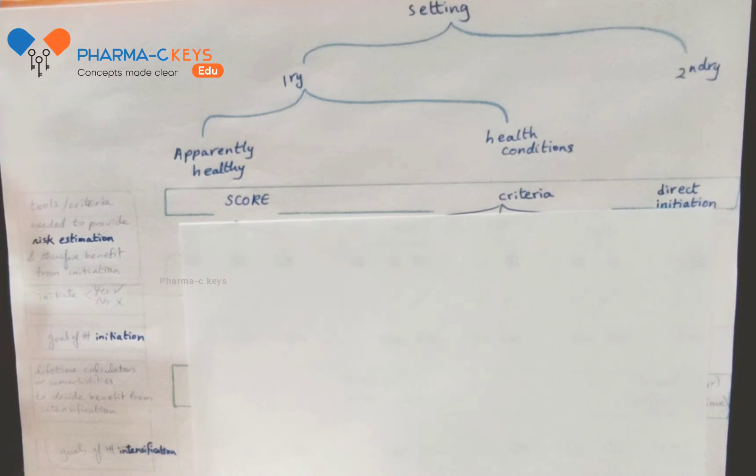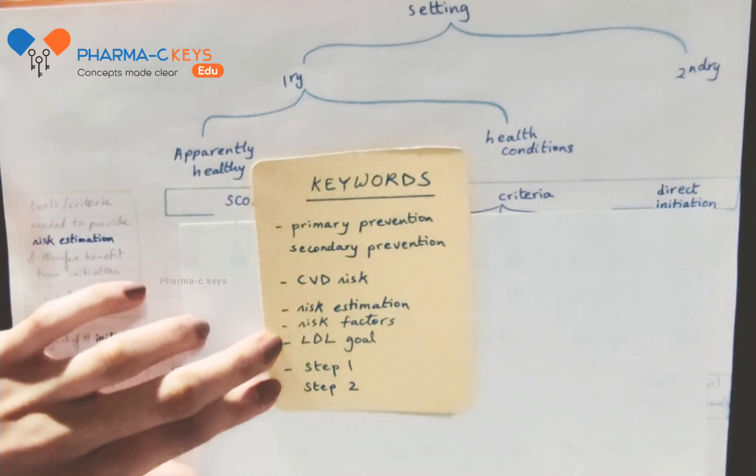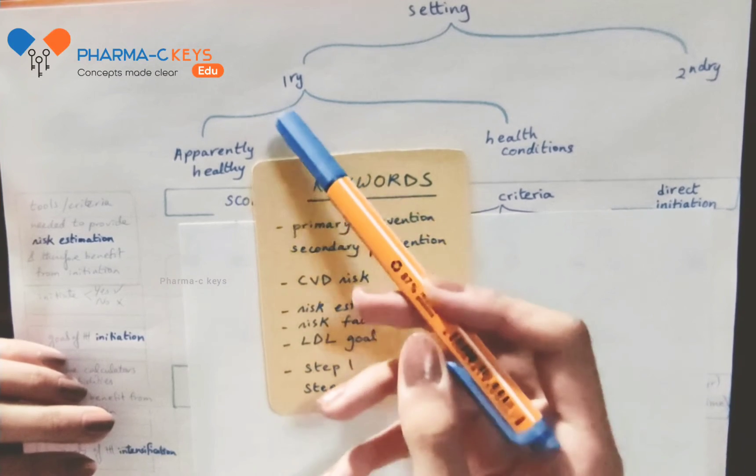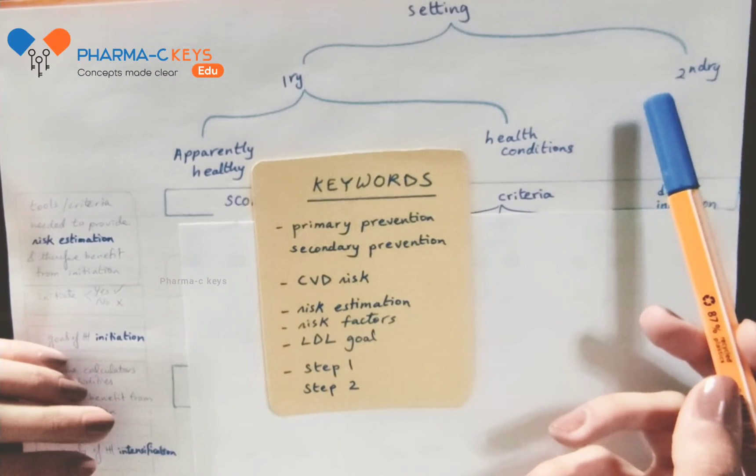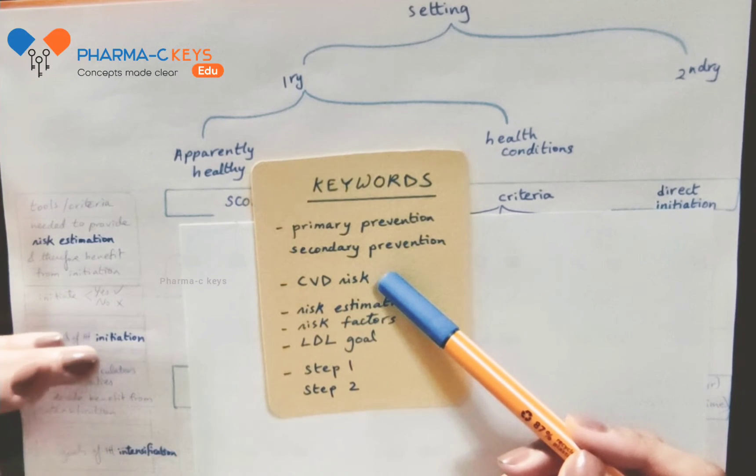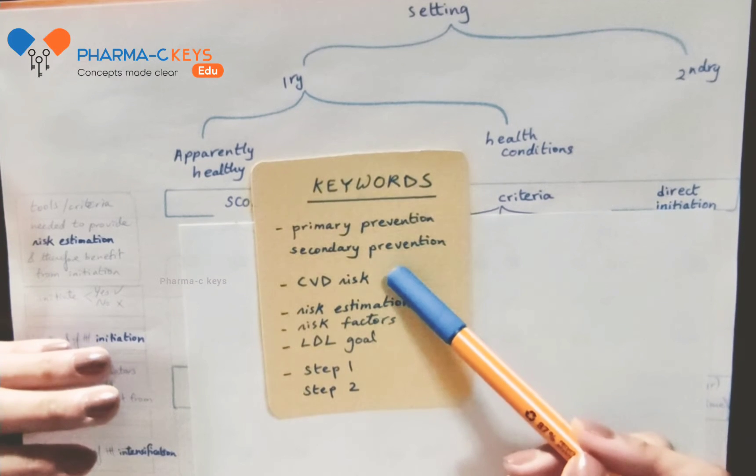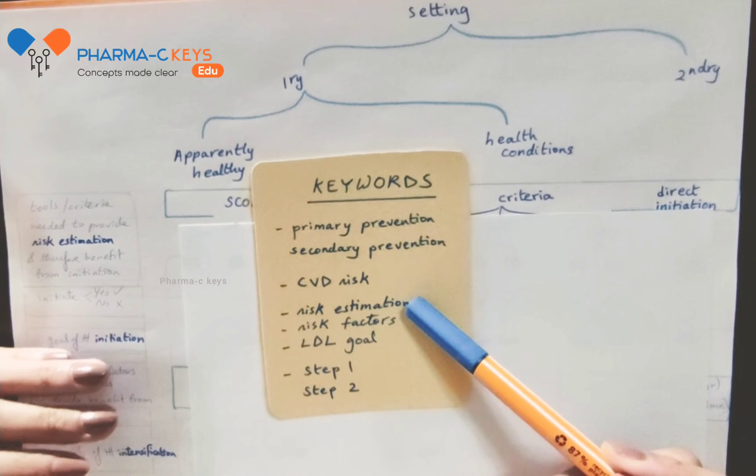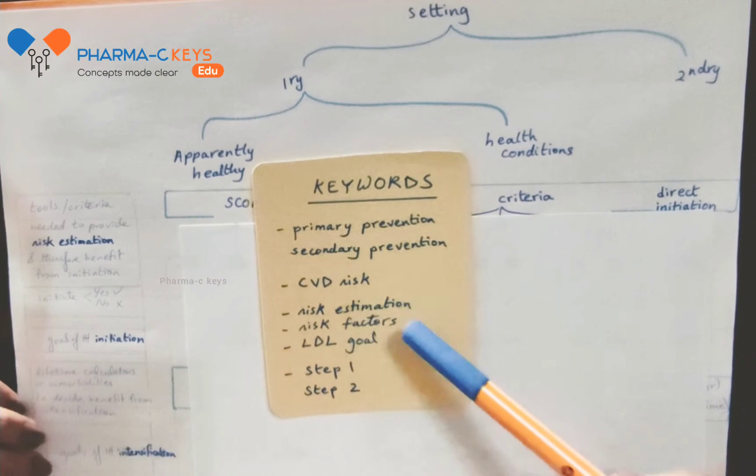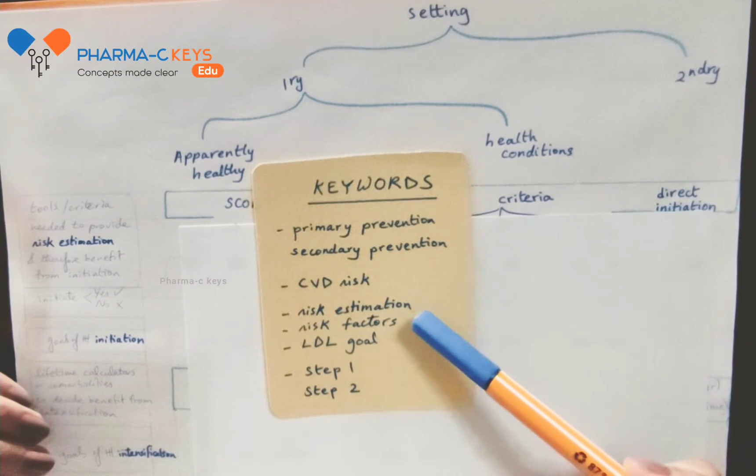The main keywords that we will be using are the LDL goals of dyslipidemia management in the primary and secondary prevention settings, the degree of cardiovascular disease, whether it is low, moderate or high risk, tools or criteria used to estimate this risk, risk factors of cardiovascular disease and their treatment goals.